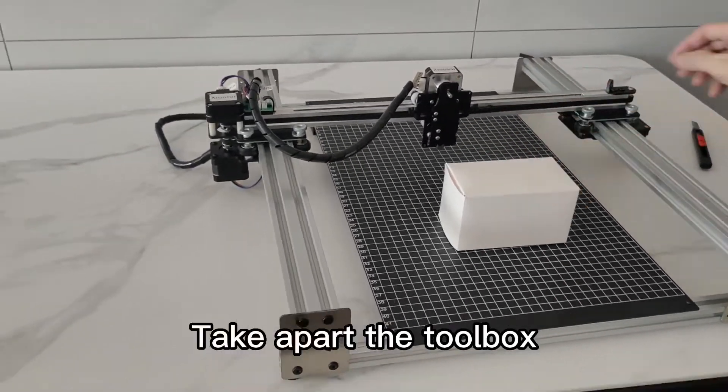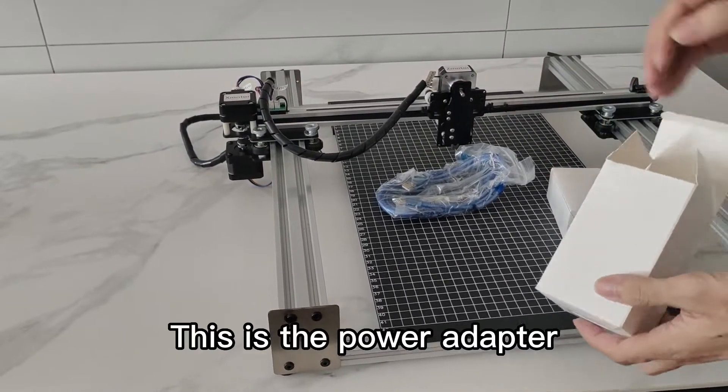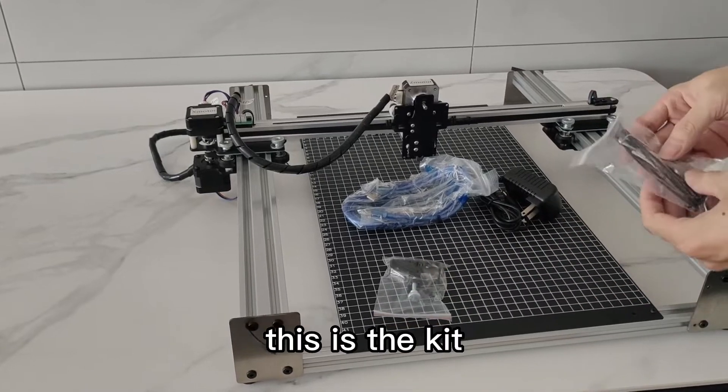Take apart the toolbox. This is a USB cable. This is the power adapter. This is a pen clip. This is the kit.